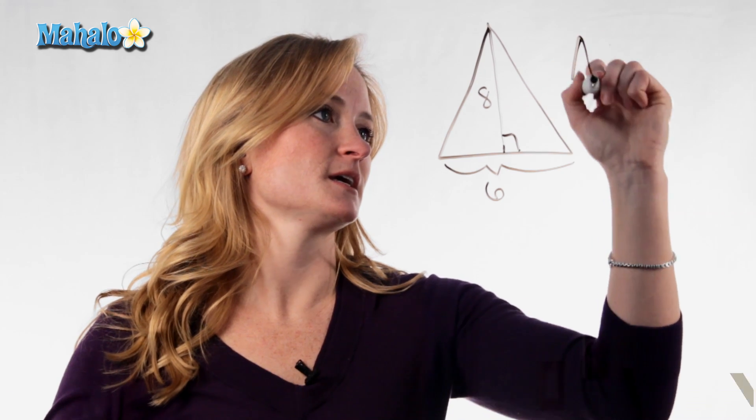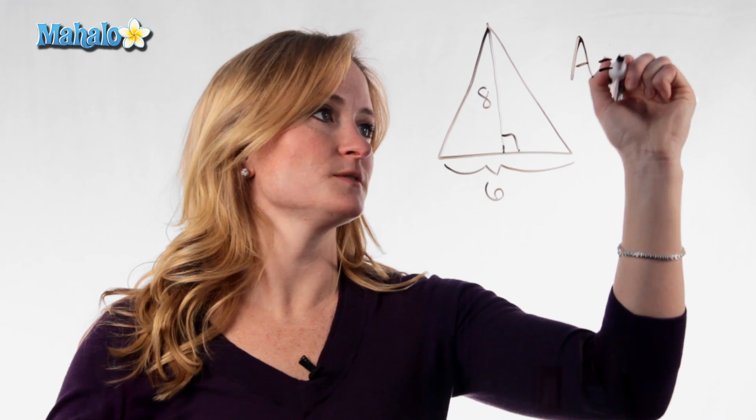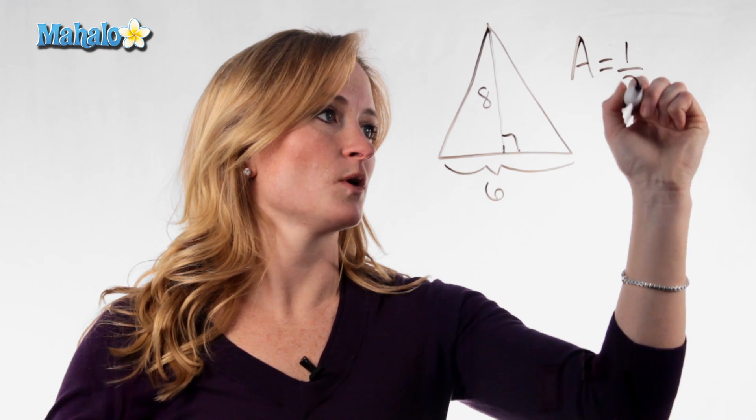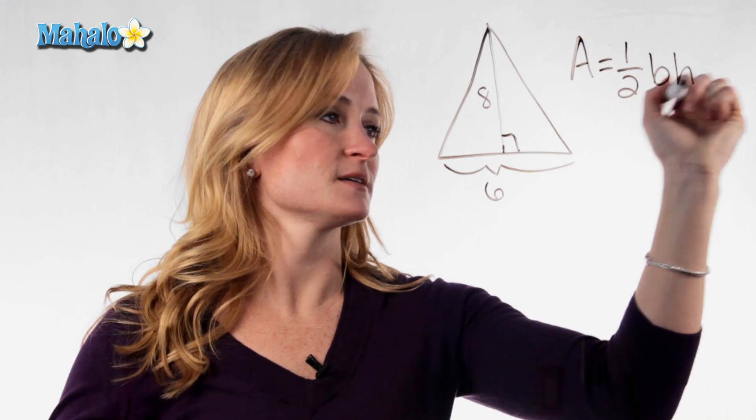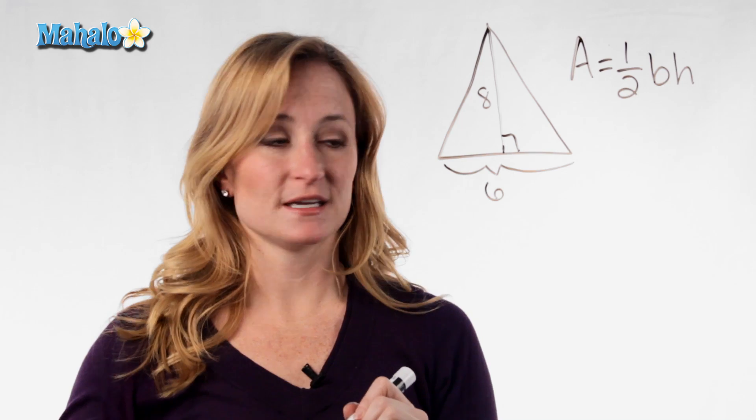Hi, this is Julie with mahalo.com, and today we're going to discuss how to find the area of a triangle. The formula for the area of a triangle is A equals one-half base times the height.